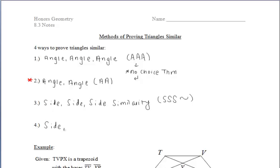And then finally, side-angle-side similarity is the fourth and final way to prove triangles similar, which means that if the ratios of the measures of two pairs of corresponding sides are equal, and the included angles are congruent, then the triangles are similar.